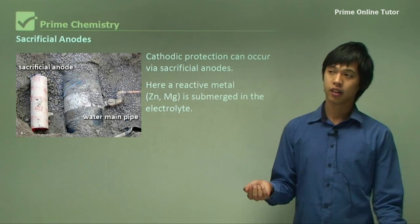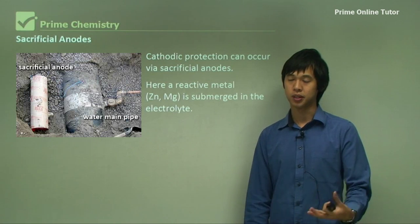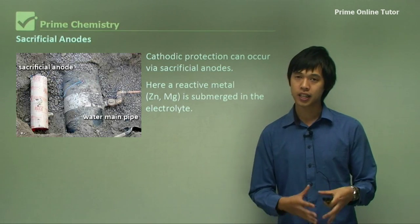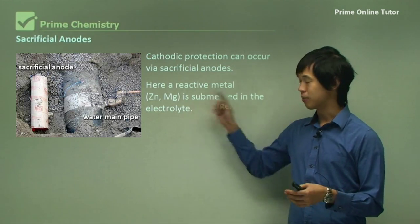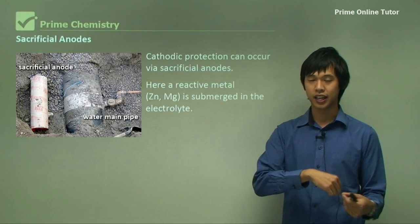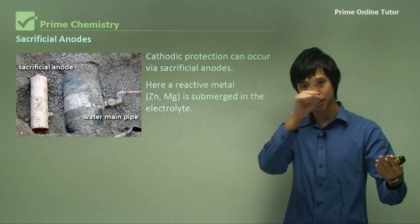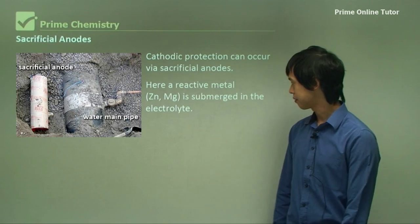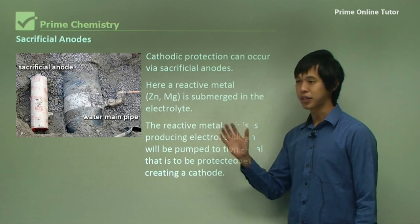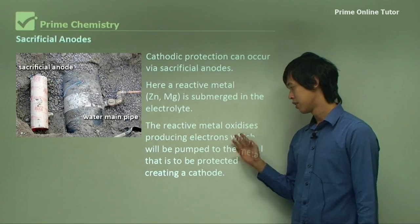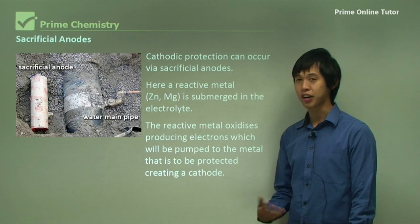For instance, if you've got a ship that you're sending through the ocean, it's sitting in an electrolyte solution of salt water, and you want to protect the ship's steel from being corroded. What you do is drop a zinc or magnesium anode into the water and connect it electrically to the hull of the ship. That forms a complete electrical circuit and helps protect the steel ship. The reactive metal oxidizes, producing electrons, which are then pushed onto the steel surface you want to protect — in this case, the steel ship — creating a cathode.